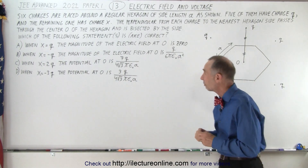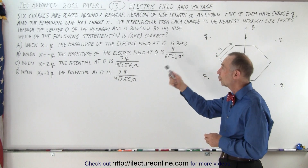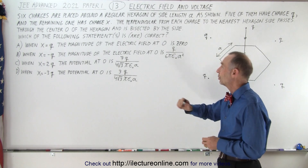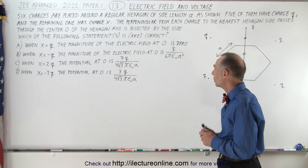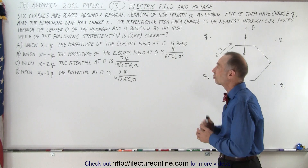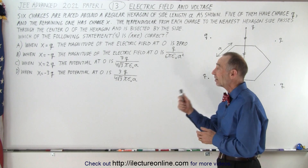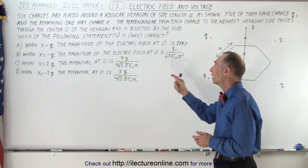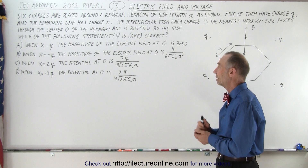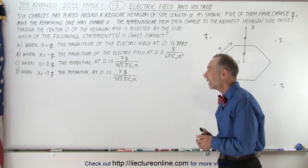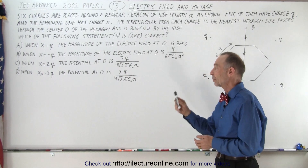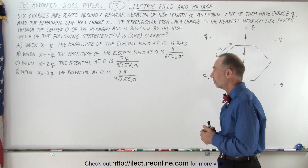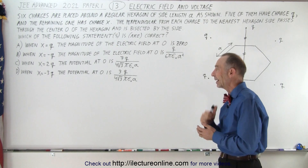The first two deal with the electric field. When X equals Q, the magnitude of the electric field at O is zero. When X equals negative Q, the magnitude of the electric field at O is Q over 6π ε₀ A². When X equals 2Q, the potential at O is 7Q divided by 4√3 π ε₀ A. And when X equals negative 3Q, the potential at O is 3Q divided by 4√3 π ε₀ A.